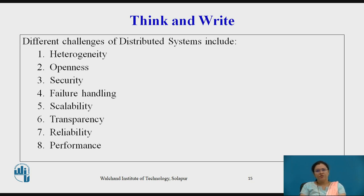In terms of scalability, distributed systems should be scalable with respect to geography, administration, or size. For transparency, the challenge is achieving the image of a single system without concealing the details of location, access, migration, concurrency, failure, relocation, persistence, and resources from users. For reliability, a distributed system should be highly capable of being secure, consistent, and have a high capability of masking errors. For performance, distributed models are expected to give a much-wanted boost to performance compared with other models. These are the challenges to consider when designing a distributed system.